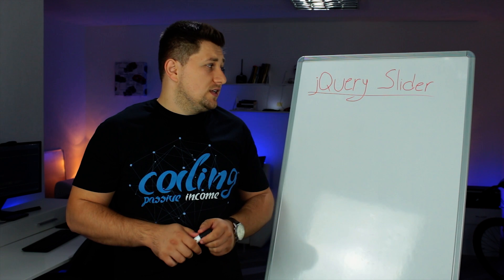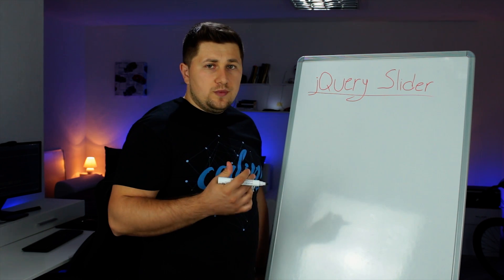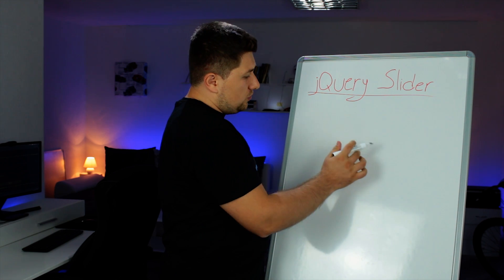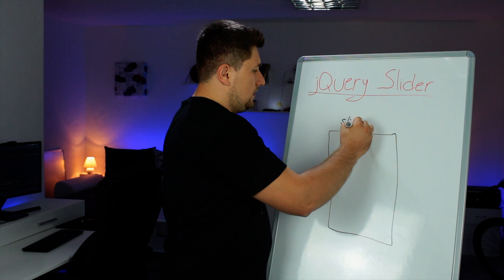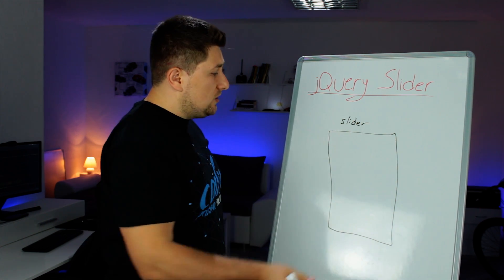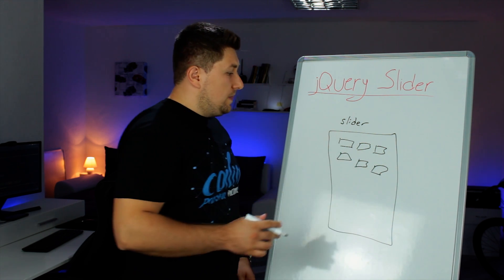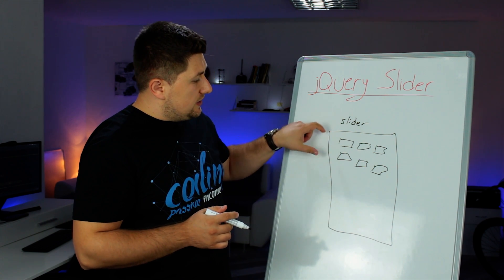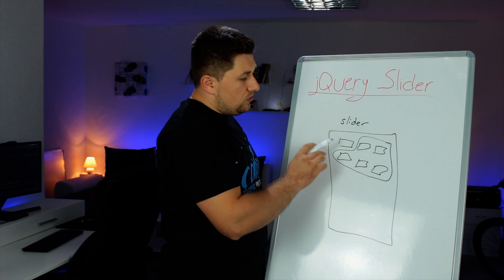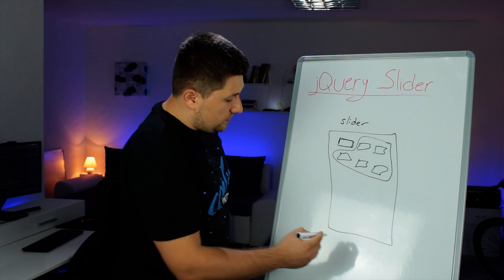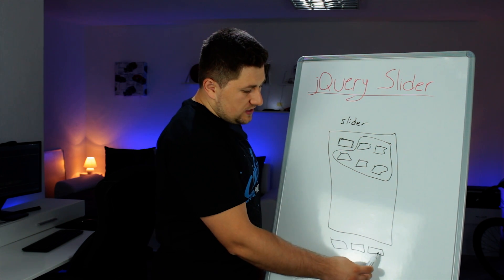Before we dive into the code, I want to explain the basics. Our goal is to create a normal HTML document with one block — our slider — and inside this slider we'll put a lot of pictures. All the images inside this slider will be hidden, and only one visible picture will be shown at a time. We'll have some buttons: Previous, Slideshow, and Next.